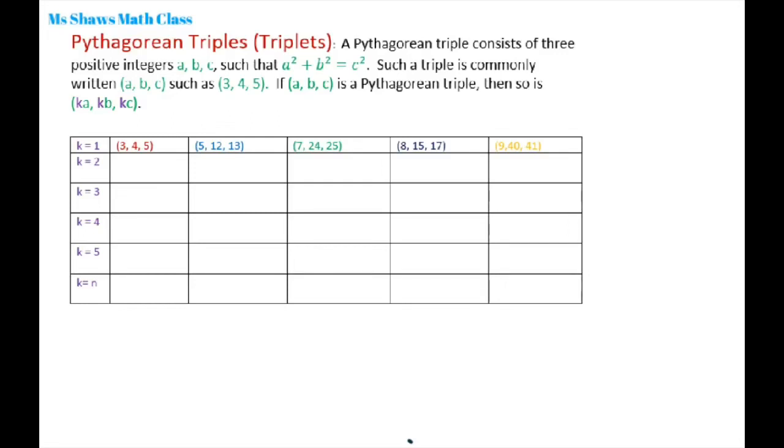Hi everyone. This is a short lesson on Pythagorean triples. A Pythagorean triple consists of three positive integers a, b, and c such that a² + b² = c². It's commonly written as (a, b, c) such as 3, 4, 5.